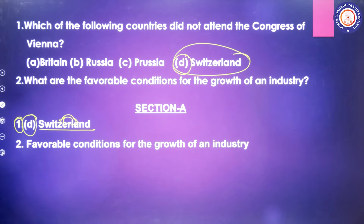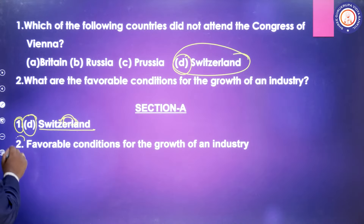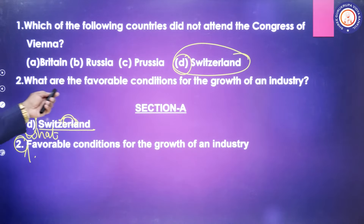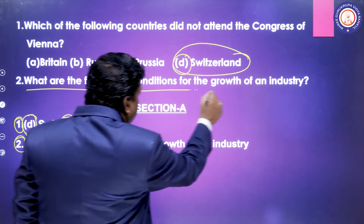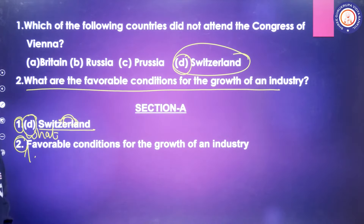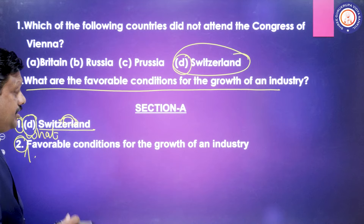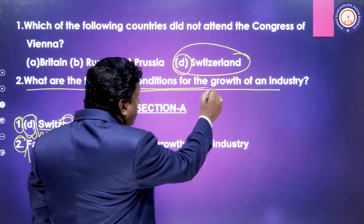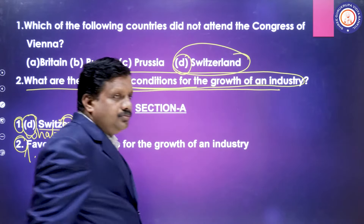For Section D long answer, here is an example question: 'What are the favourable conditions for the growth of an industry?' First, create a heading from the question — 'Favourable conditions for the growth of an industry' — leaving out the question mark. This becomes your heading.